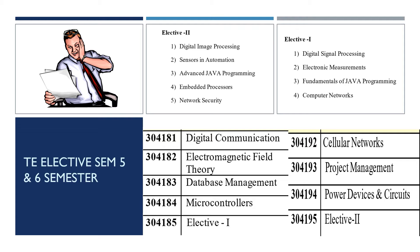For Elective One, the choices are: Digital Signal Processing, Electronic Measurements, Fundamentals of Java Programming, and Computer Networks. For Elective Two, the choices are: Digital Image Processing, Sensors in Automation, Advanced Java Programming, Embedded Processor, and Network Security.